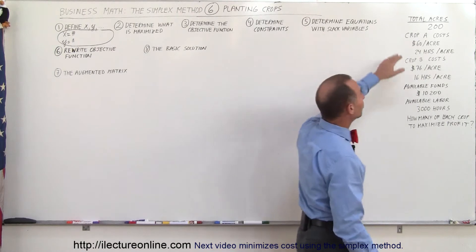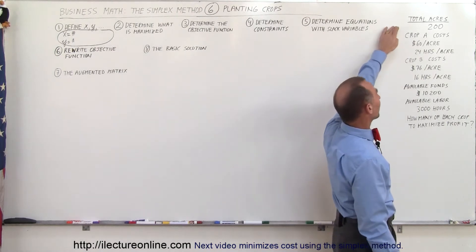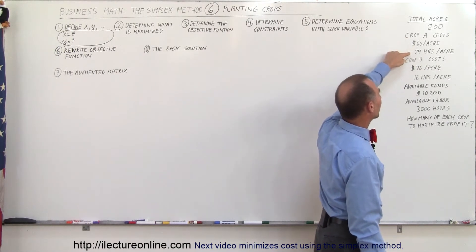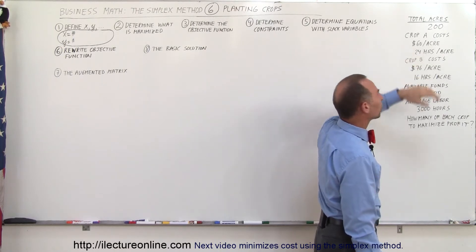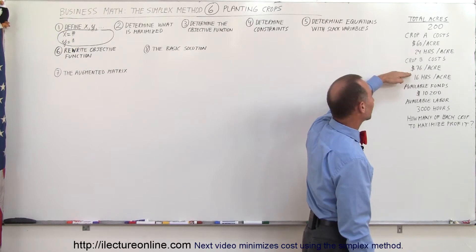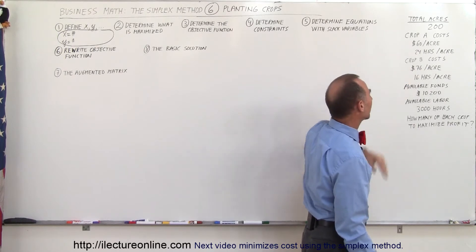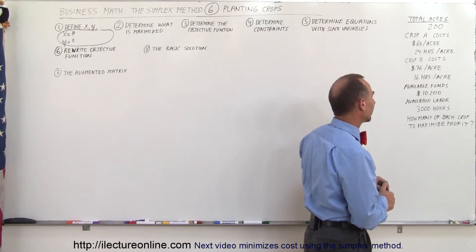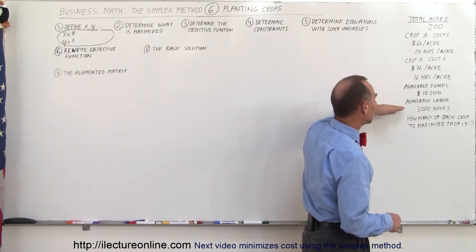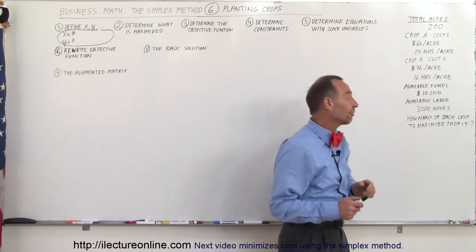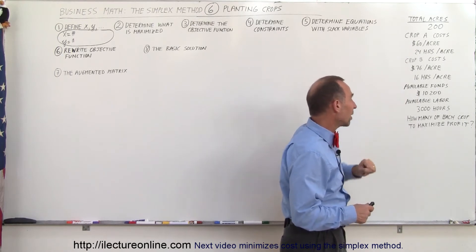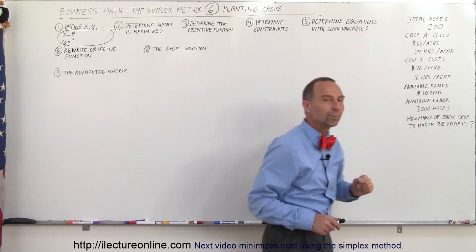The details here are that we have 200 acres available. Crop A costs $60 per acre to grow and 24 hours per acre to maintain. Crop B costs $76 per acre and requires 16 hours of labor per acre. We have $10,200 of available funds and 3,000 hours of available labor. The question is how many of each crop should we grow in order to maximize profit?